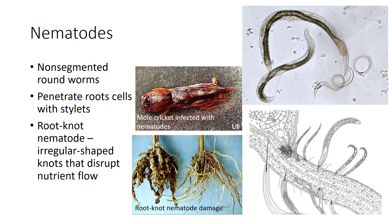Nematode movement in the soil is very slow — they only move 12 to 30 inches per year. In a natural setting, they pose little problem of moving from one area to another. However, nematodes are disseminated by wind, air, tools, and equipment. Accurately diagnosing nematodes requires laboratory testing.